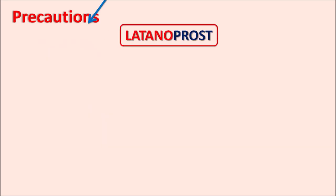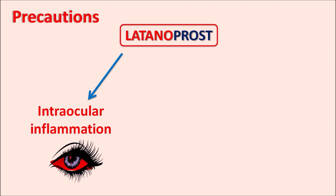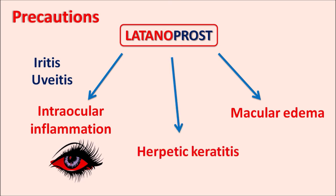Latanoprost can also increase intraocular inflammation — it can produce redness of the cornea, iritis, and uveitis, so care should be taken to monitor any inflammation within the anterior chamber of the eye. It can also produce macular edema (swelling of the macula) and viral infections such as herpetic keratitis, caused by herpes simplex infection.